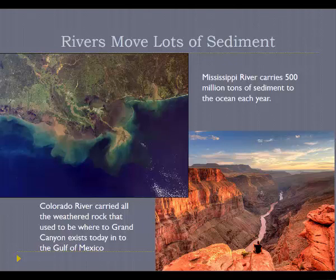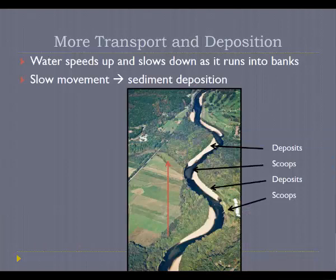Some big examples help us appreciate how much sediment rivers move. The Mississippi River carries over 500 million tons of sediment to the ocean each year — you can actually see all that sediment being dumped into the ocean from space. Another extreme example is the Grand Canyon: the Colorado River carved that canyon over hundreds of thousands of years, eroding all the material and dumping it into the Gulf of Mexico.